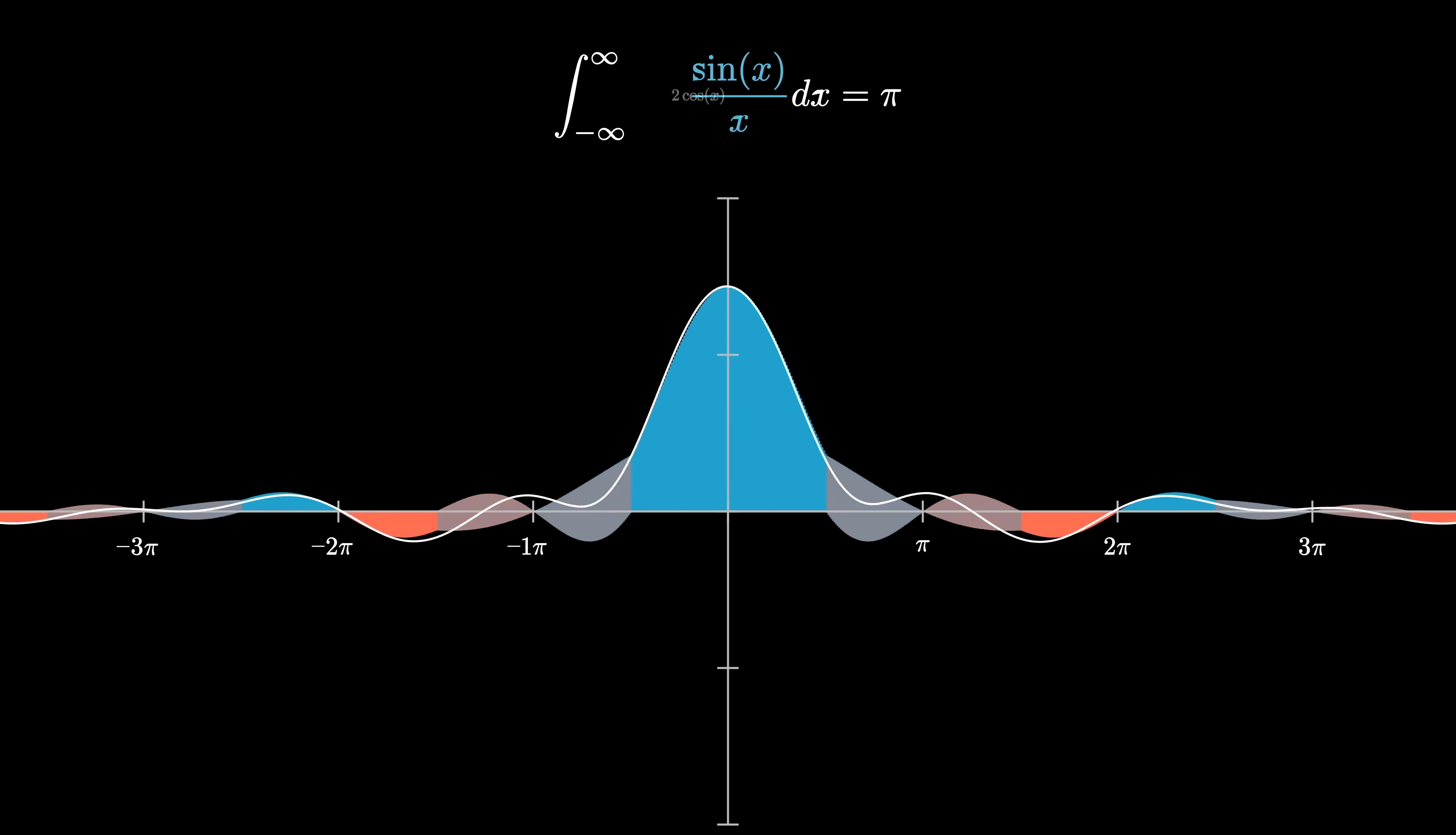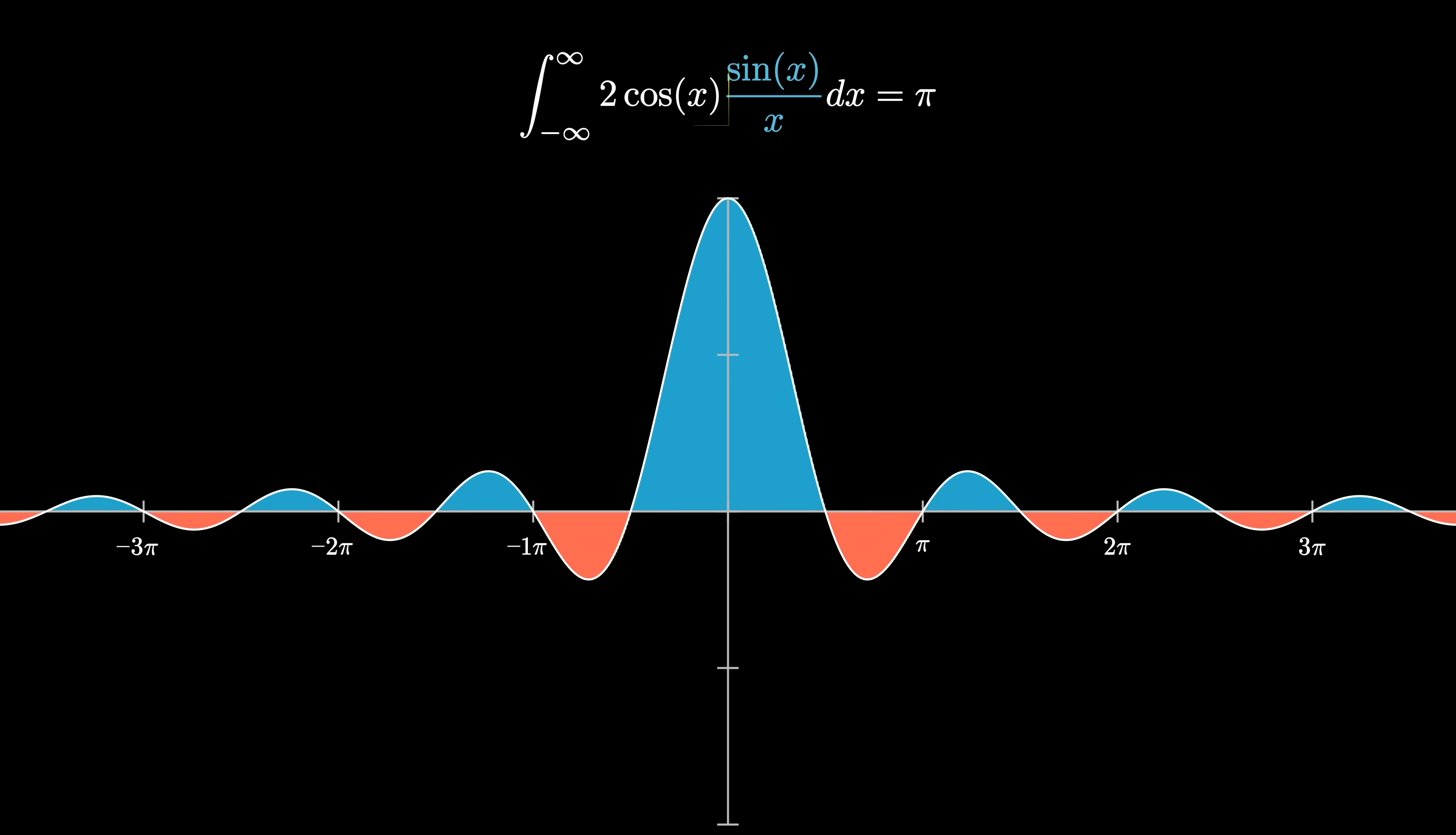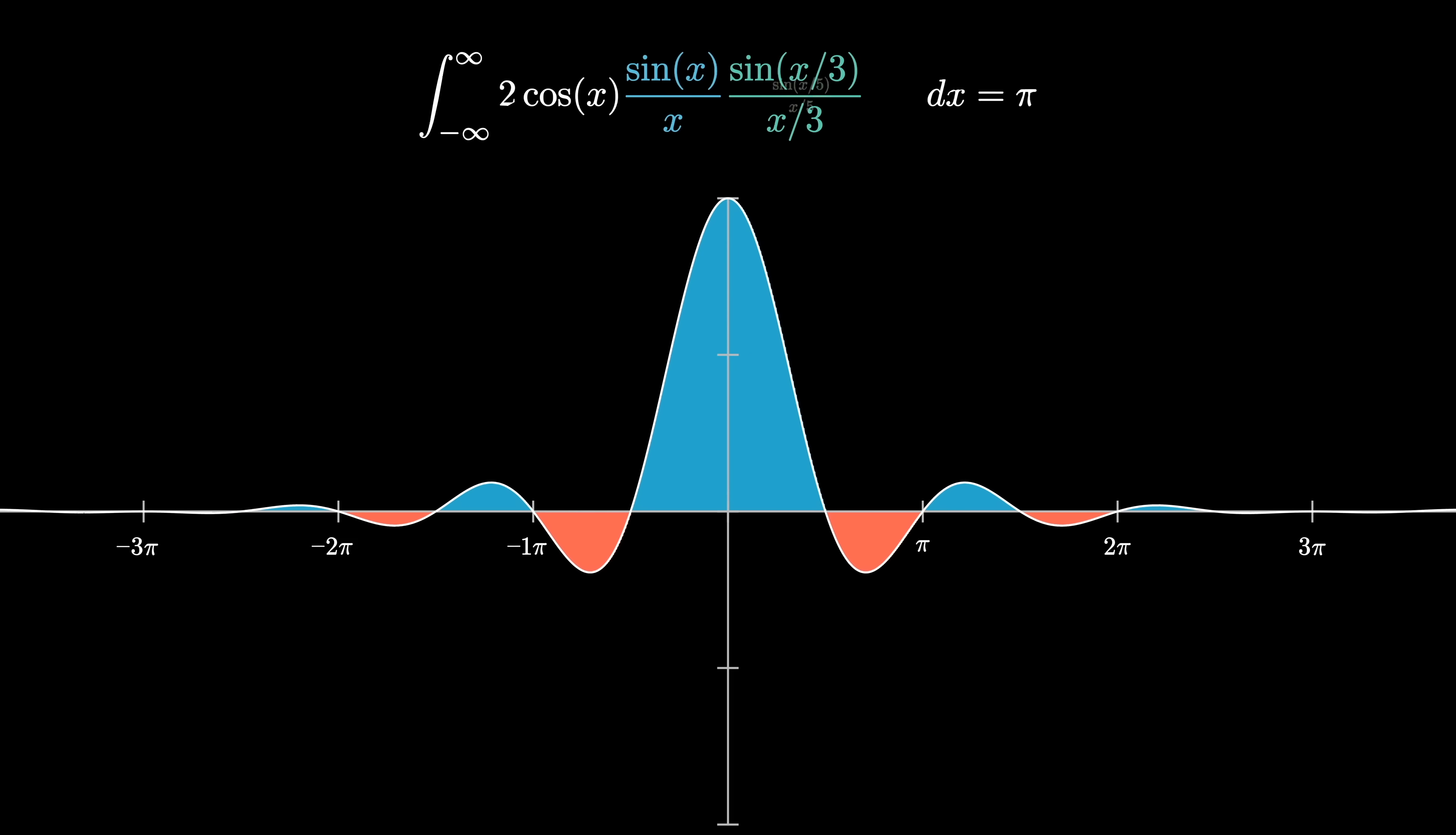And it gets weirder than that, actually. If we take all these integrals and include yet another factor, 2 cosine of x, which, again, you would think changes their values entirely. You can't just randomly multiply new things into an integral like this.